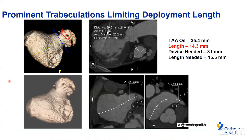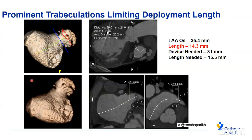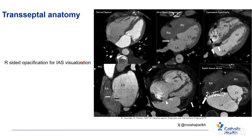We also want to look at prominent trabeculations, which could limit the deployment length. Here we see a large trabeculation limiting the device length, measuring 14.3 millimeters. Based on measurements, the minimum length needed is 15.5 millimeters, so this patient at their current state would not be a good candidate. For transeptal anatomy, we look for normal septum, atrial septal aneurysm, lipomatous hypertrophy, PFO, ASD, or septal closure devices — this helps in transeptal planning and assessing procedure difficulty. We want right-sided opacification to see the interatrial septum well.